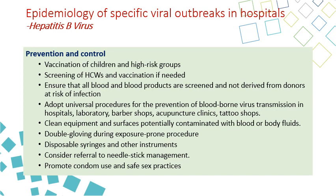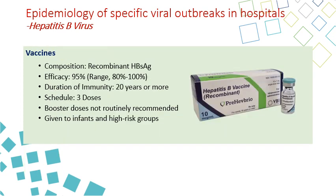Needle stick injury is one of the underreported problems in healthcare facilities. Promote condom use and safe sex practices to prevent sexual transmission of hepatitis B. The vaccine is a recombinant hepatitis B S antigen, very efficacious at 95%, and continues for up to 20 years. It is given in three doses: one month between the first and second dose, and six months between the second and third dose. Booster doses are not routinely recommended unless the patient is in a high-risk group.